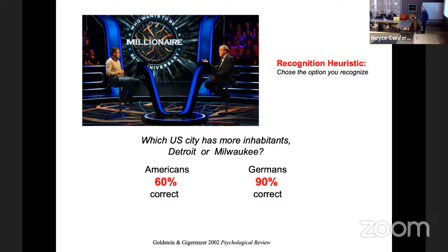Now the other way: which German city has more inhabitants — Bielefeld or Hanover? Most of you got it right — Hanover. If I ask the same questions to Germans, many of them get it wrong because they had heard of both and need to retrieve knowledge about them. We have a less-is-more effect here: you got more questions right about German cities than about Americans, even though you know more about Americans than Germans.